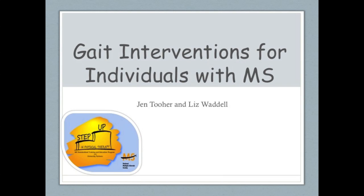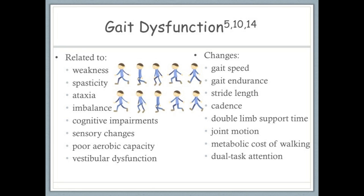This module will discuss gait interventions for individuals with MS. Gait dysfunction is extremely common in MS. Because of the variability of symptoms, many people with MS can have gait dysfunction for different reasons, including core and lower extremity weakness, spasticity and tone, ataxia, imbalance, cognitive impairments and intention difficulties, sensory changes, decreased endurance, or vestibular dysfunction.